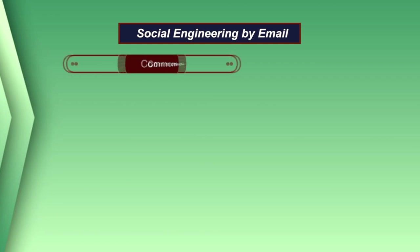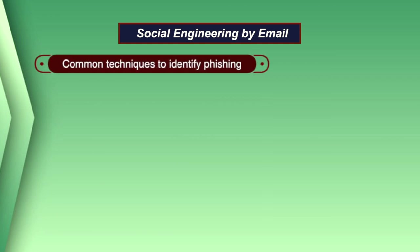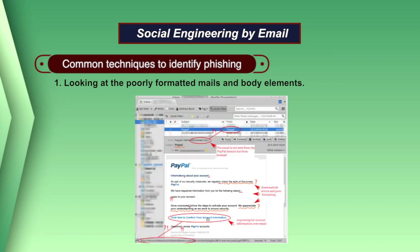Now we will discuss some of the common techniques to identify phishing. The first technique is to look at poorly formatted mails and body elements. A common practice of many hackers is to use misspelled words on purpose. While it may seem that this would easily reveal an illegitimate email, it is actually a tactic used to find less savvy users. Spammers have learned that if they get a response from a poorly written email, they are on to an easy target.